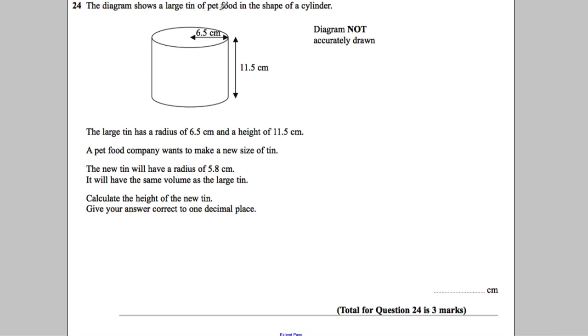The diagram shows a large tin of pet food in the shape of a cylinder. The radius of the cylinder is 6.5 cm and the height is 11.5 cm. The diagram is not drawn to scale, so we've got to use calculations rather than measurement.